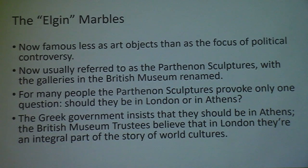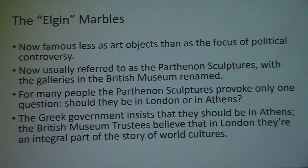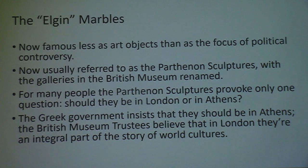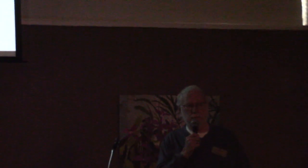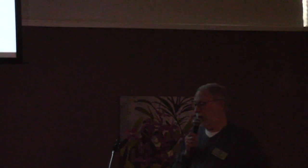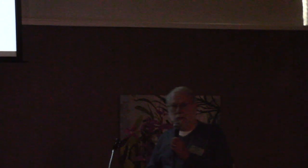The tendency now is to no longer refer to them as the Elgin Marbles but rather the Parthenon sculptures or Parthenon marbles, and the galleries in the British Museum have been renamed to reflect that. For many people, the Parthenon sculptures provoke only one question: should they be in London or should they be in Athens? The Greek government insists they should be in Athens. The British Museum trustees believe they're an integral part of the story of world cultures — better viewed in relationship to other sculptures from Egypt and Rome.